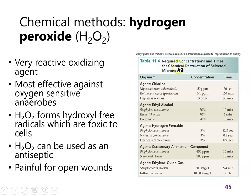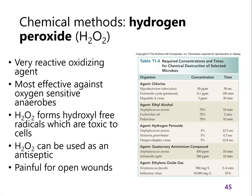There's a reference table of concentrations and times for various chemical agents against various microorganisms. Note that concentrations vary from less than one part per million up through 70% for ethanol, and times range from seconds to hours. If you see a time like 150 minutes or 25 hours, that's telling you that agent really doesn't work or would never be used against that microorganism.